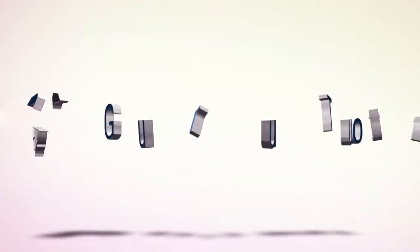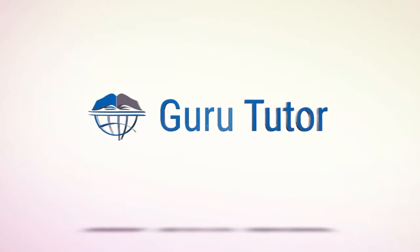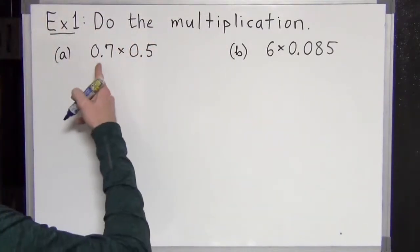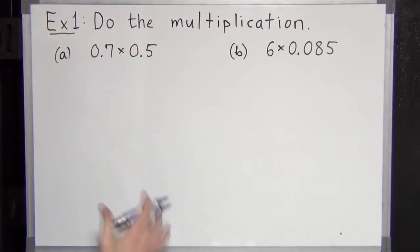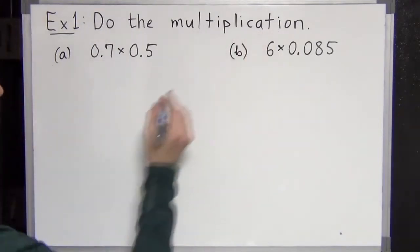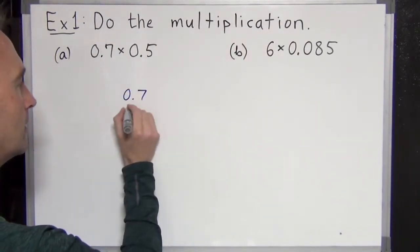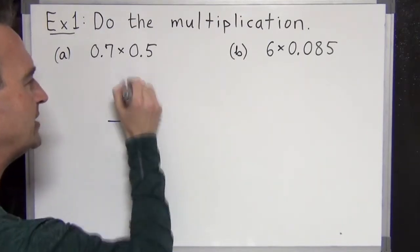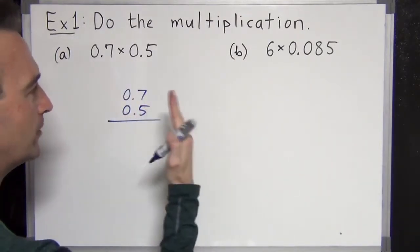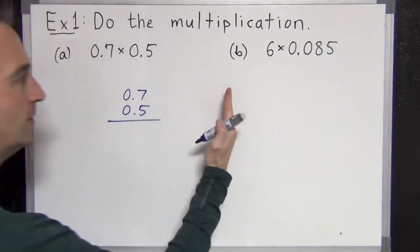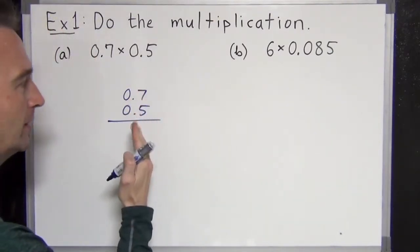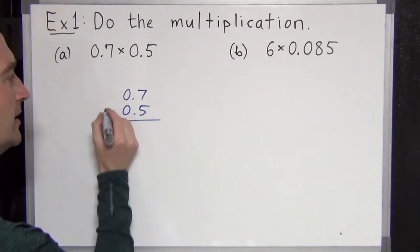Let's give multiplying decimals a shot. Let's begin. First example we've got 0.7 times 0.5. Now to multiply decimals, we're going to write them above and below again in a vertical manner. But whether or not the decimal points actually align doesn't matter. It's more like from the right side, the first non-zero digits have to align. Okay, but here the decimals do align. It's just kind of lucky.